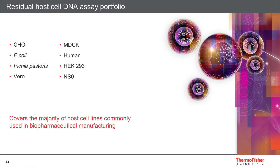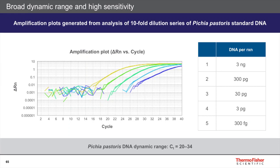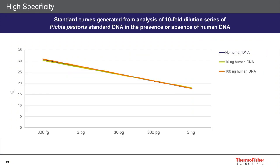We have a range of assays within the ResDNAseq portfolio covering the majority of host cell lines commonly found in biopharma manufacturing, both mammalian and microbial. The amplification plot shown across a tenfold dilution series demonstrates that CT values for each concentration are exactly where we would expect them to be — even at very low concentrations we get highly efficient amplification, giving confidence that sensitivity is where it needs to be for limits of detection and quantitation.